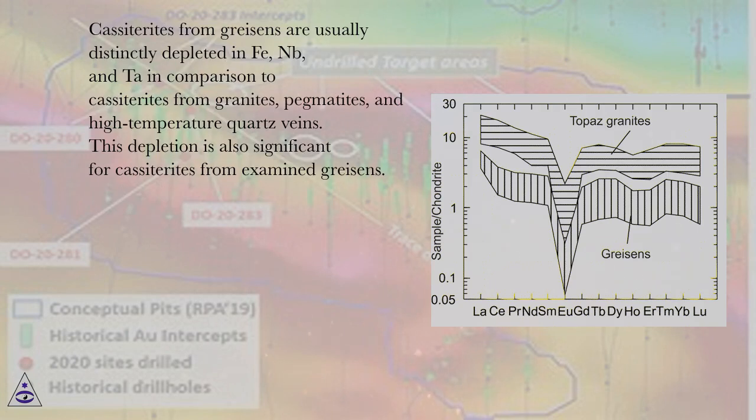Cassiterites from greisens are usually distinctly depleted in Fe, Nb, and Ta in comparison to cassiterites from granites, pegmatites, and high-temperature quartz veins. This depletion is also significant for cassiterites from examined greisens.